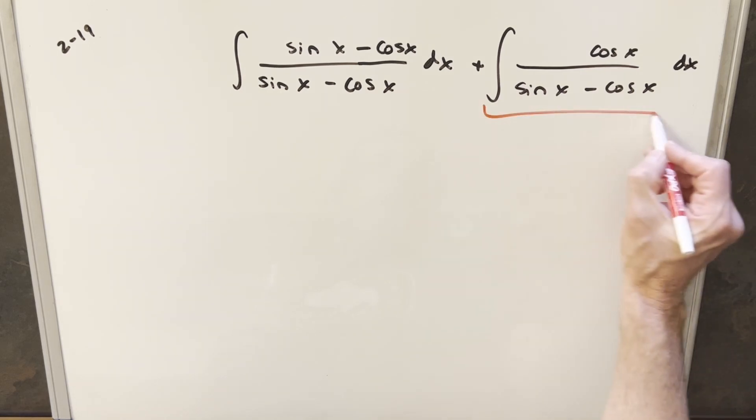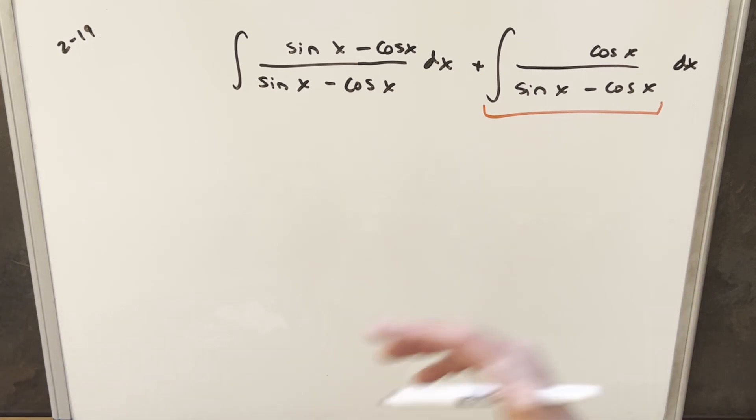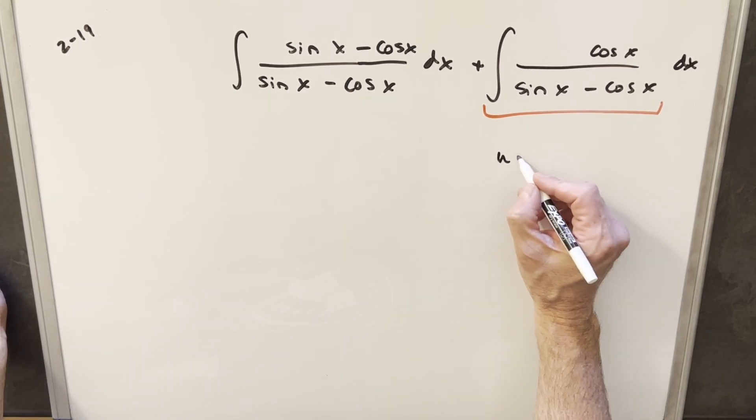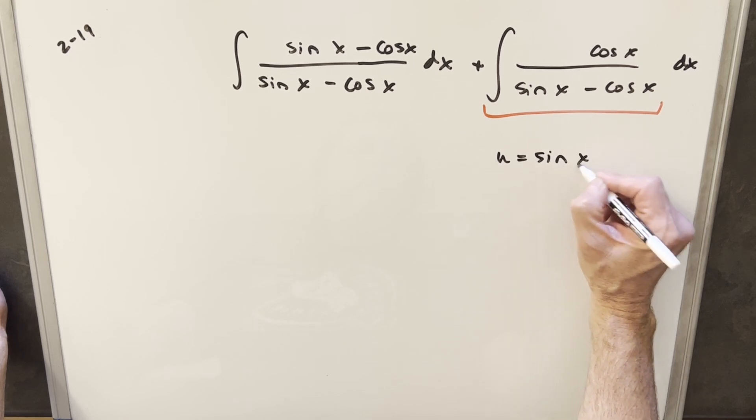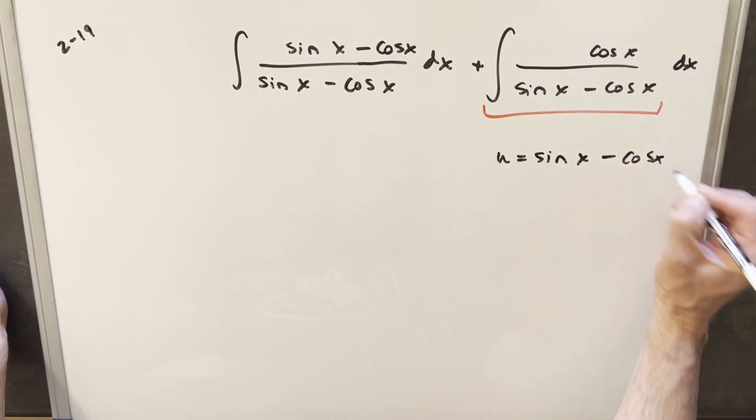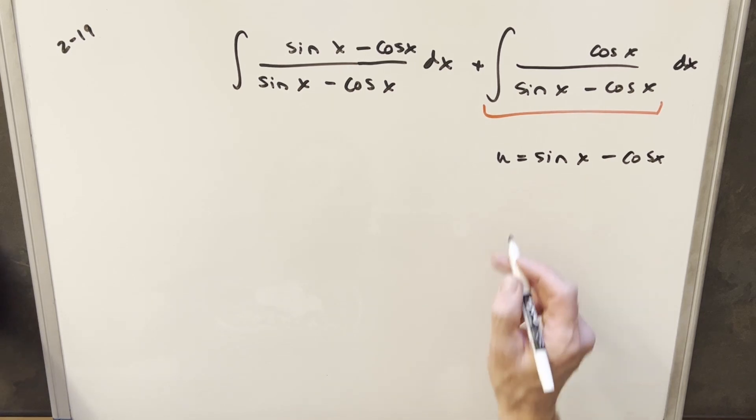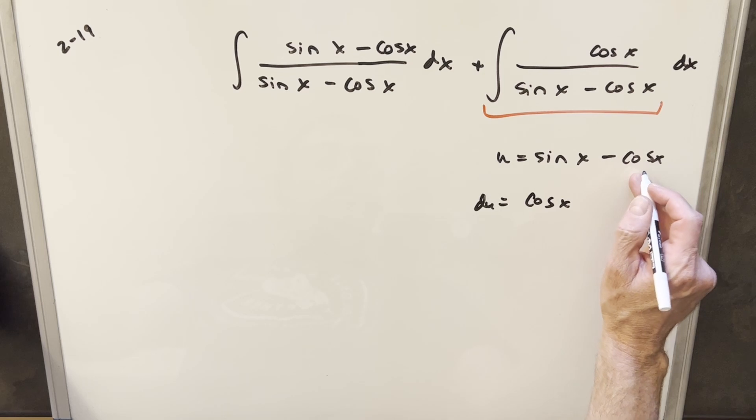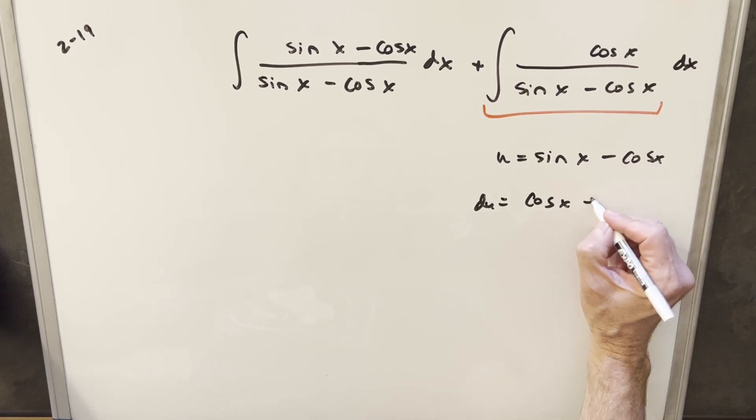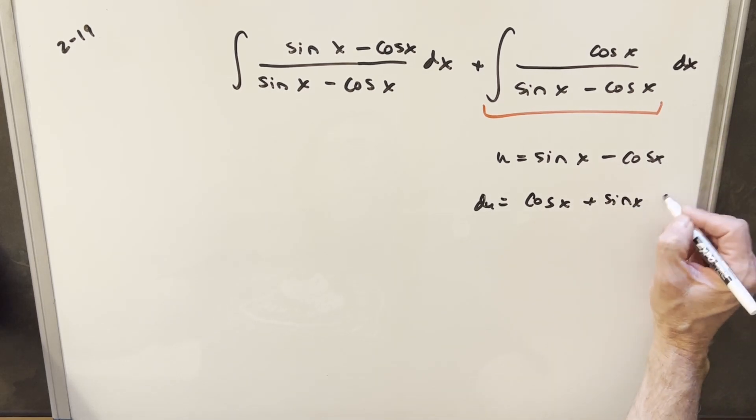Well, what I want to do, focusing on this, what I'm trying to set up is a u substitution. And what I want to happen, for this to come out nice and be pretty easy, is if I make my u for the whole denominator here. So I'm going to call my u equal to sine x minus cos x. We'll take a derivative here, so du is going to become cos x plus, this is going to be minus sine x, but with a minus, it's going to be a plus sine x dx.